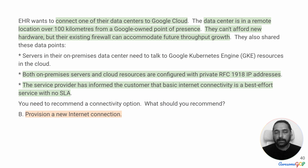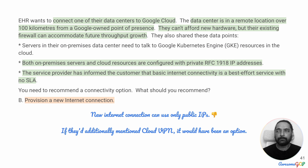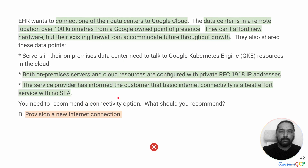Option B says provision a new internet connection. There's already presumably an internet connection. A new internet connection is not going to give you private IPs by default — you won't automatically access private IP addresses across a public network, which would be a security issue. If the option had said 'provision a new internet connection and set up Cloud VPN,' then we could have had RFC 1918 addressing. But just getting a new public internet connection serves no purpose here. We eliminate option B.